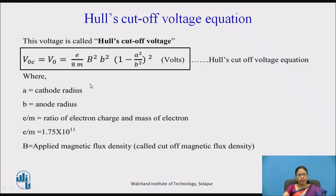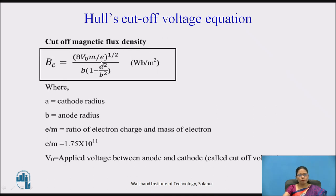Rearranging the terms in the cutoff voltage equation gives the cutoff magnetic flux density: BC = [8V₀m/e]^(1/2) / (b · (1 − A²/b²)). This is the cutoff magnetic flux density at which the electron just touches the surface of the anode and returns. V₀ is the cutoff voltage applied between anode and cathode. We have thus derived both the cutoff voltage and the cutoff magnetic flux density equations.